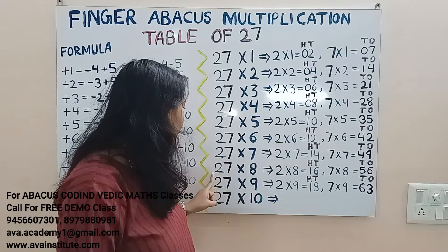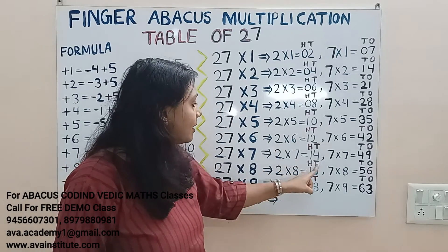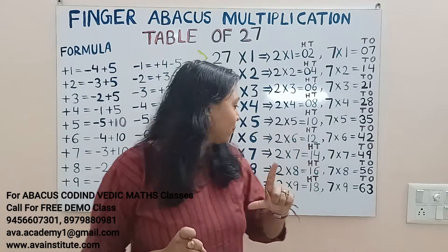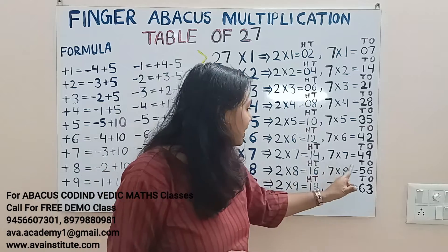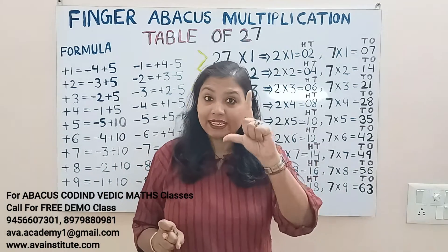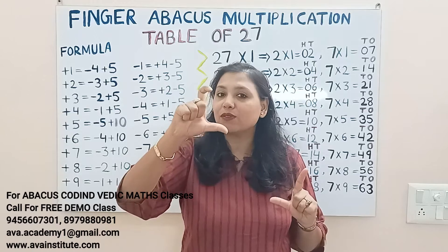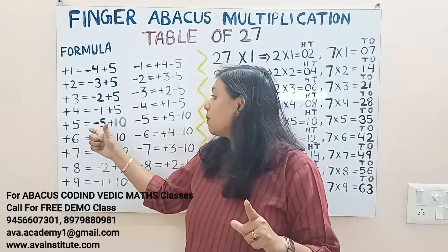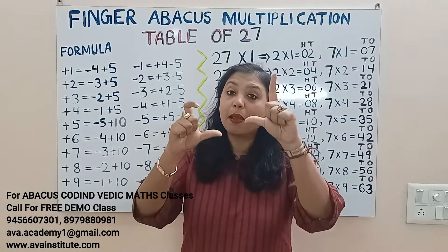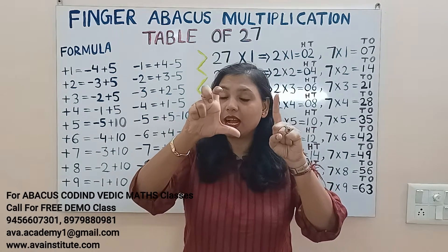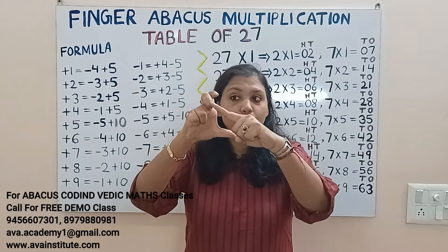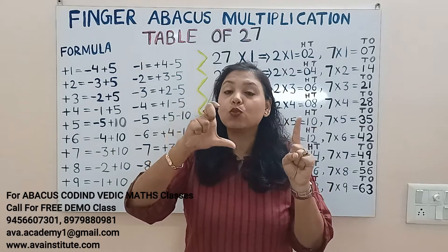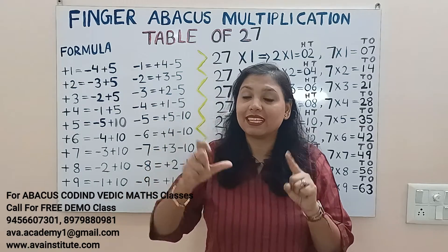27 eights: 2 eights are 16 — in hundreds 1, in tens 6. 7 eights are 56 — in tens 50, in ones 6. To add 50: plus 5 formula is minus 5 plus 10, so plus 50 formula is minus 50 plus 100. The answer is 200, with tens 10 and ones 5, 6 — 216 is the answer.